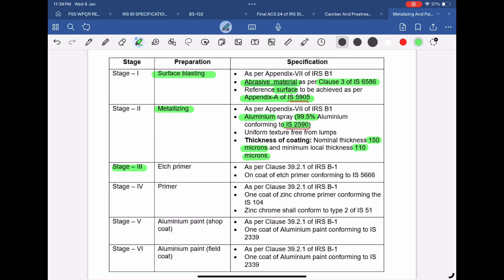Stage 3 is the stage at which one coat of wash primer or etch primer conforming to IS 5666 shall be applied. After 4 to 6 hours of the application of this etch primer, one coat of zinc chrome primer conforming IS 104 shall be applied as covered in Stage 4. Zinc chrome to be used in the manufacturing of primer shall be conforming to type 2 of IS 51.